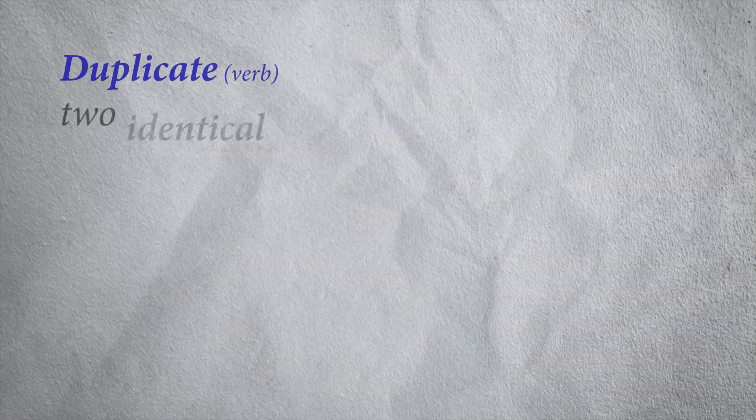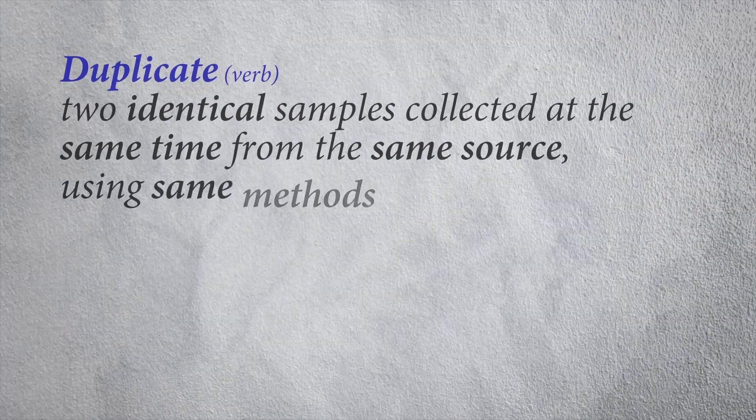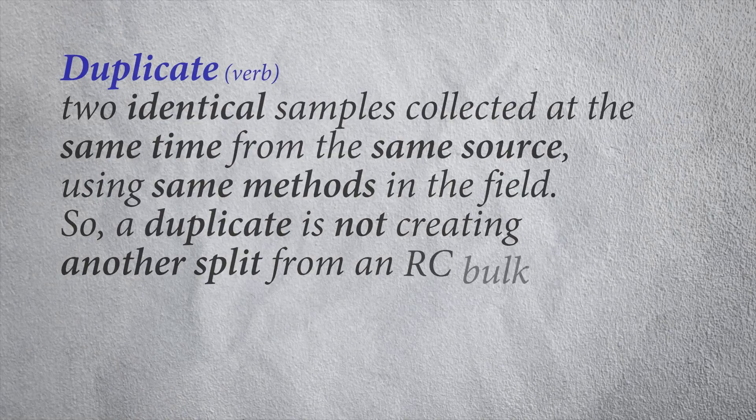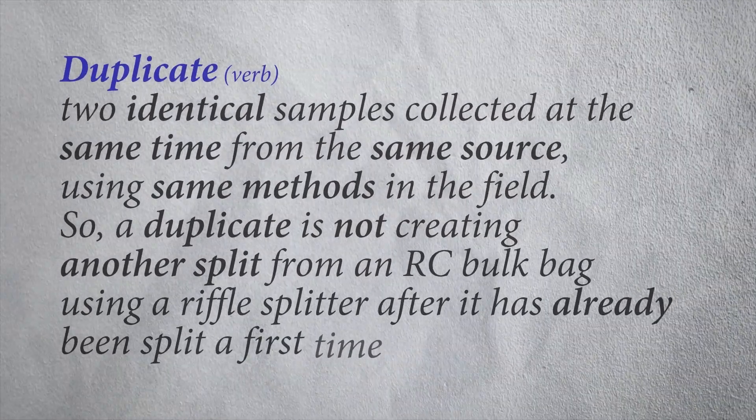I'll start with my definition, just like I did in Part 1. Duplicates: two identical samples collected at the same time from the same source using the same methods in the field. A duplicate is not creating another split from an RC bulk bag later using a riffle splitter after it's already been split the first time using a cone splitter — that is not a duplicate. When you are repeating a process, then it is a repeat. If you do one action to one thing and it creates two of the same, you've got a duplicate.